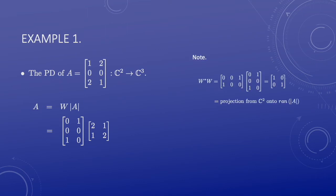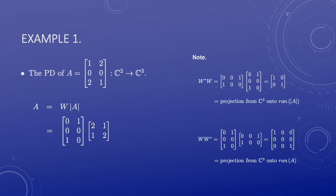Does this factorization make sense? One thing we could check is that W star W is a projection. In this case, it is the projection from C^2 onto the range of the polar of A. The range here is the span of the two column vectors. These two vectors are linearly independent, so they span the entire space C^2. Therefore, the projection is just the identity operator, which is what we have. W W star is supposed to be the projection from C^3 onto the range of A. The range of A is the span of these two column vectors, which span a two-dimensional subspace where the second coordinate is zero. That corresponds to W W star, as it kills the second coordinate and leaves out the first and third coordinates.